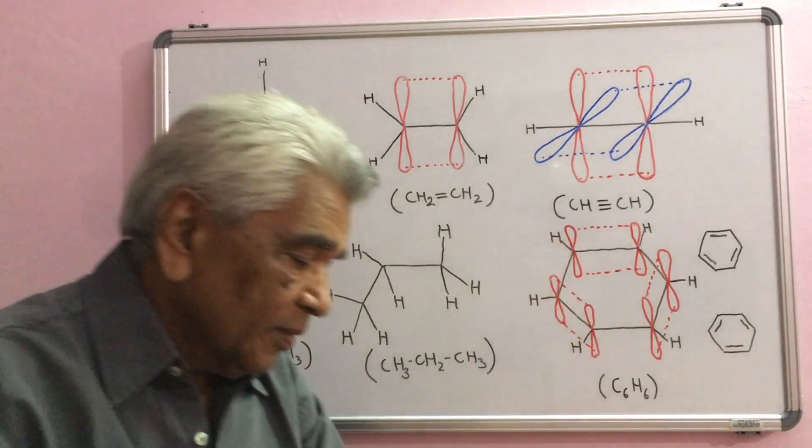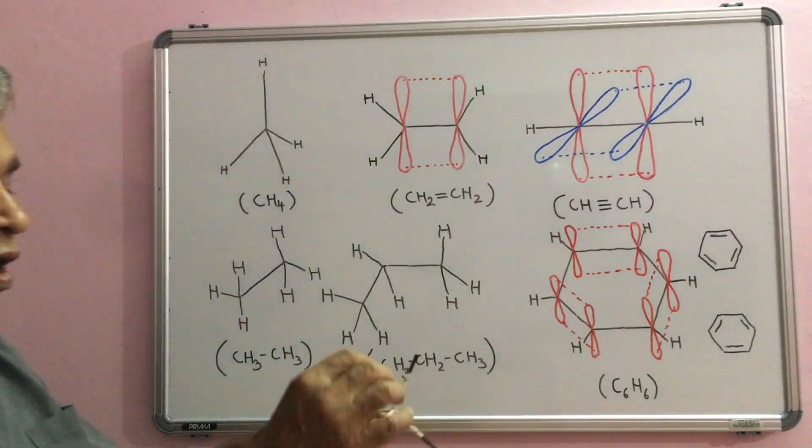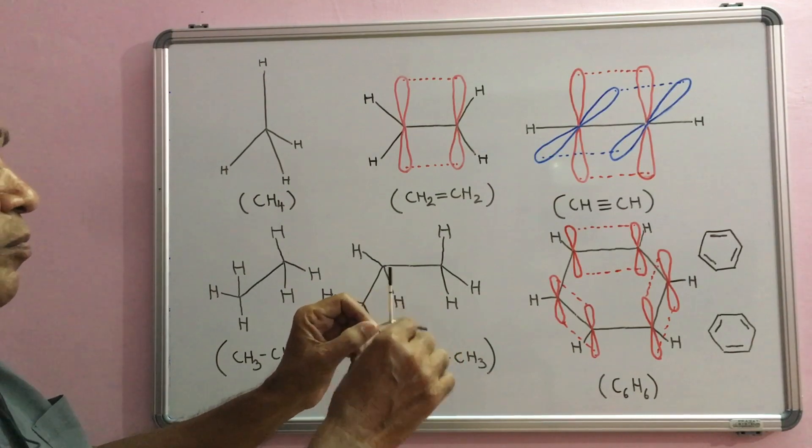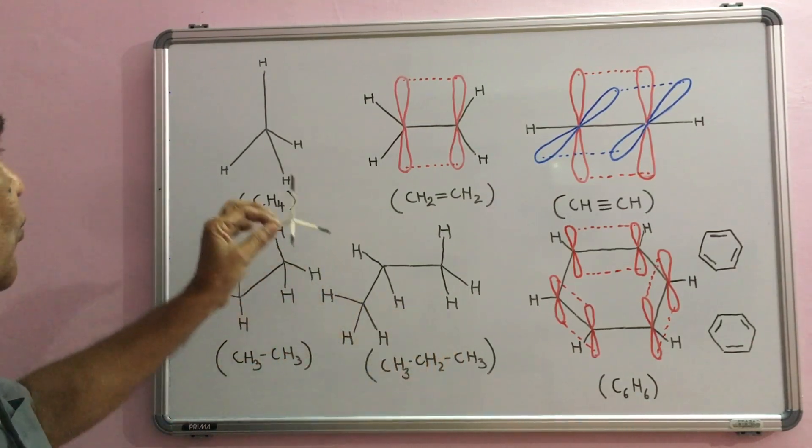This carbon atom - I have put hydrogen atoms here - sp3 s-overlap forming four CH bonds. So methane looks like this.